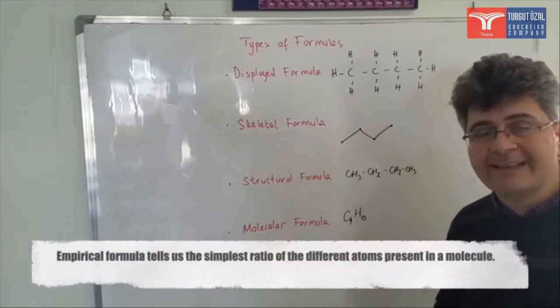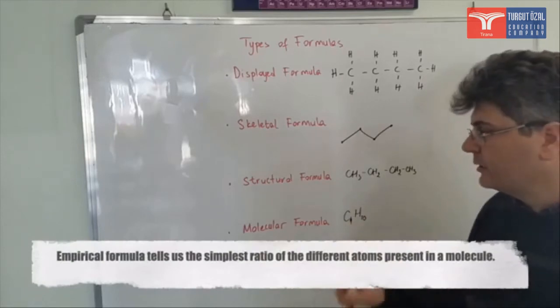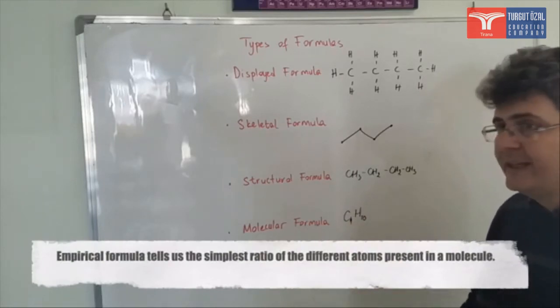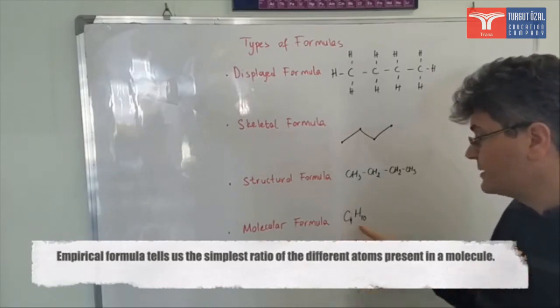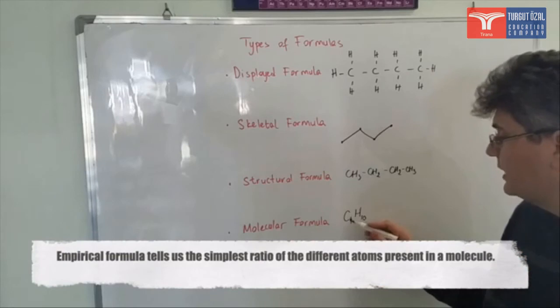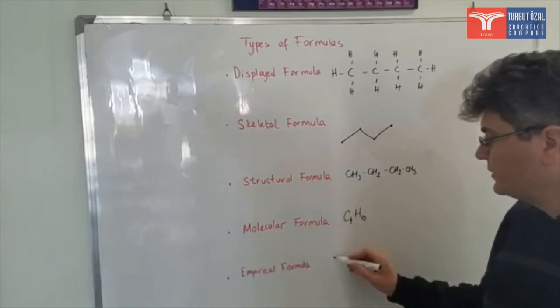Empirical formula is simplified version of the molecular formula. It gives only the ratio between the numbers of elements. For example, in here we have four carbons and ten hydrogens. The ratio between carbon and hydrogen is two to five. So the empirical formula will be C2H5.